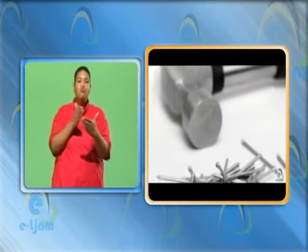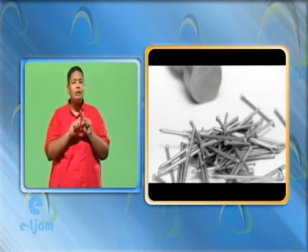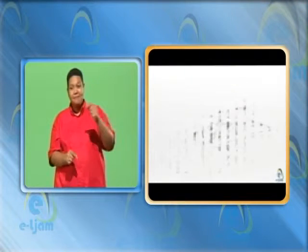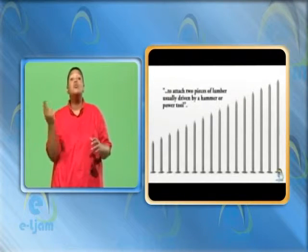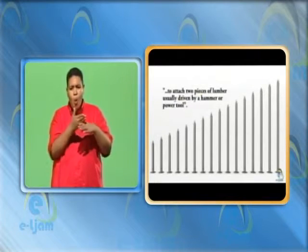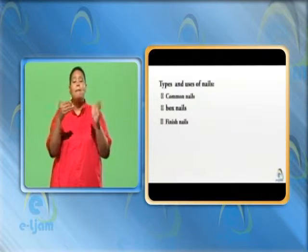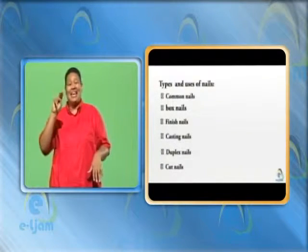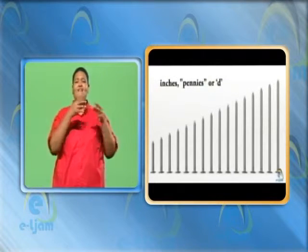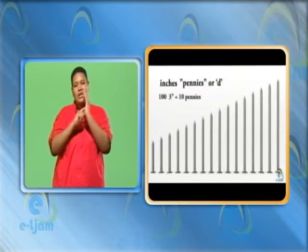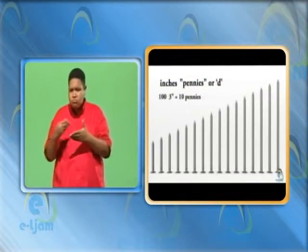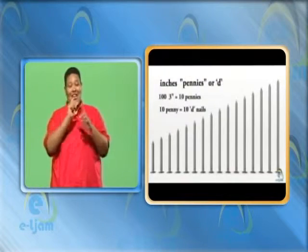The discussion of hammers is not complete without discussing different types of nails. One of the applications of nails is to attach two pieces of lumber, usually driven by a hammer or power tool. Main types include common nails, box nails, finish nails, casing nails, duplex nails, cut nails, and roofing nails. The size of the nail is defined in terms of its length in inches. In the old days, these were defined in terms of pennies or 'd'. For example, if a carpenter could buy 10 three-inch length nails for 10 pennies, then these nails were called 10-penny or 10D nails.